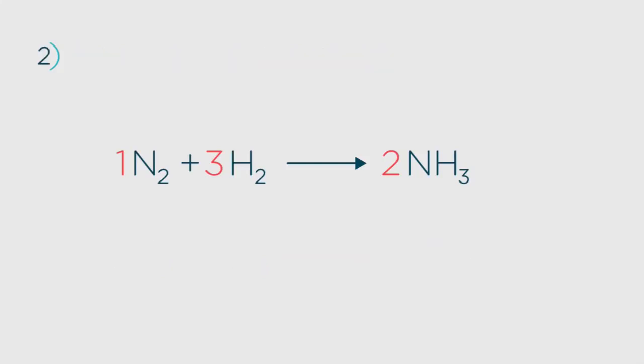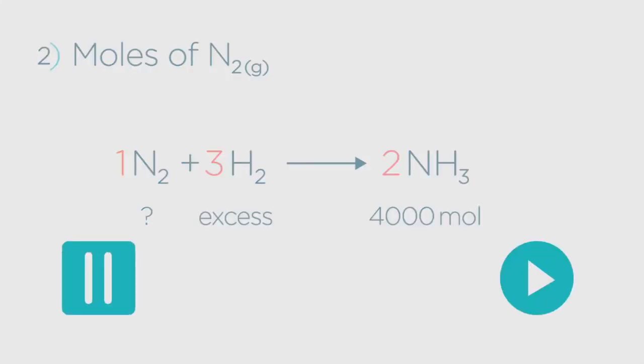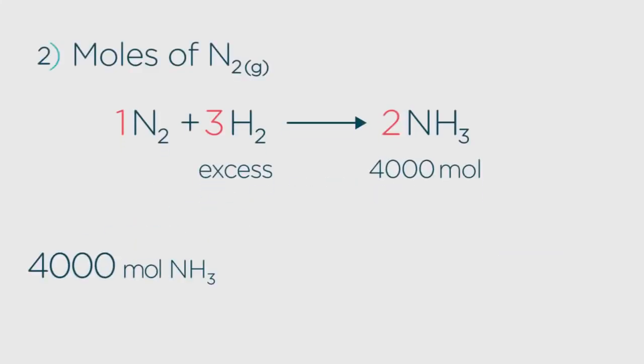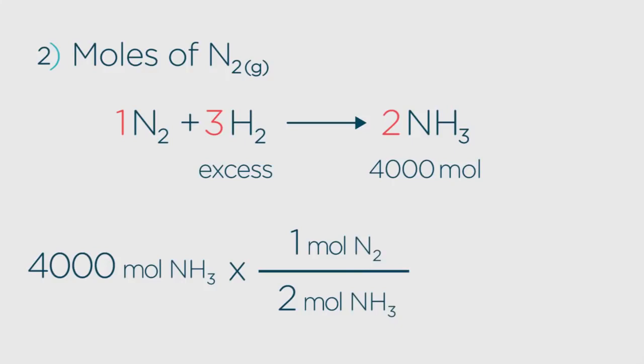Can you work out how many moles of nitrogen gas were used to make the 4,000 moles of ammonia? Pause again and resume when you have the answer. Well, you simply have to divide the 4,000 by the molar ratio, which is 2. So the answer is 2,000 moles of nitrogen. Did you get that one?